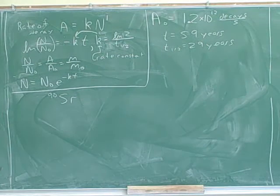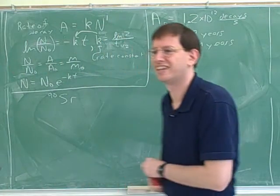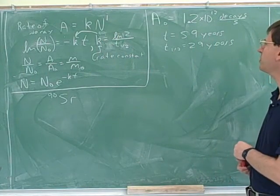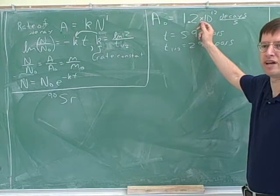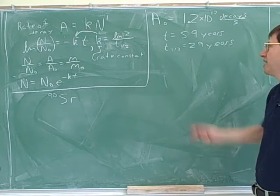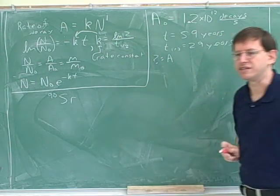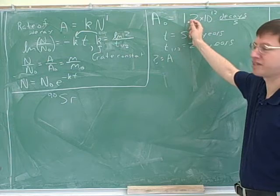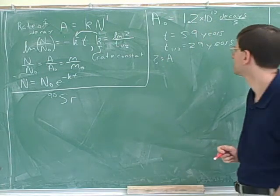Why exactly? Because it's a half-life — when it's a half-life, we just need to... Let's make a prediction first. Is the activity going to be bigger or smaller than this number? Smaller. The question is asking us for the activity after 59 years, and we can predict it's going to be smaller than this — we're going to be losing activity over time.